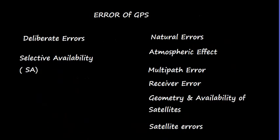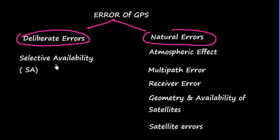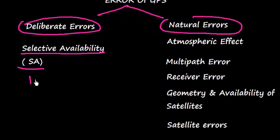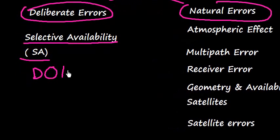There are various errors of GPS. They can be divided into two categories: deliberate errors and natural errors. These deliberate errors, one type is selective availability, are introduced by the U.S. Department of Defense to safeguard their national interest. The other types of errors are atmospheric, multipath, receiver, geometry, and availability of satellite.